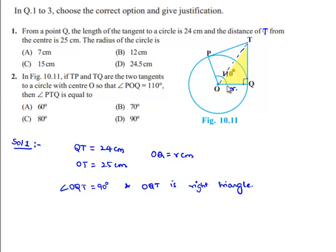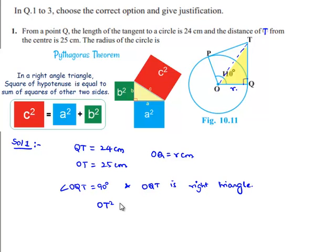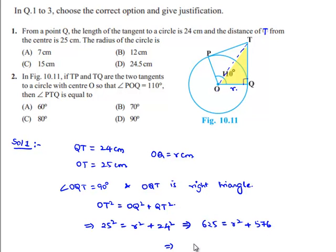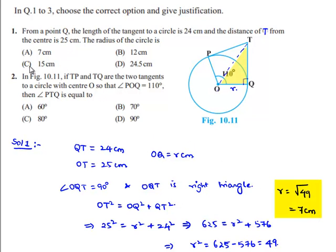By applying the Pythagorean theorem: OT² = OQ² + QT², which gives 25² = r² + 24², so 625 = r² + 576, therefore r² = 625 − 576 = 49, giving r = 7 cm. Therefore option A is the correct choice.